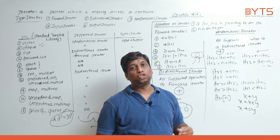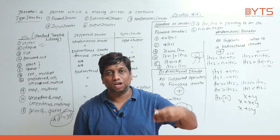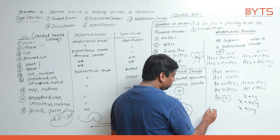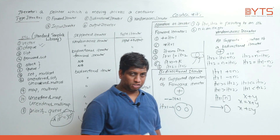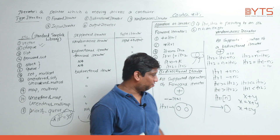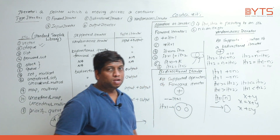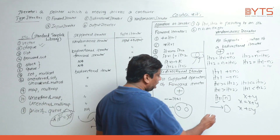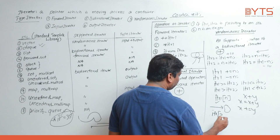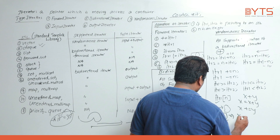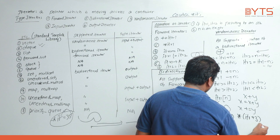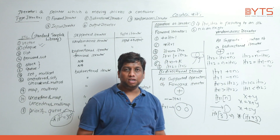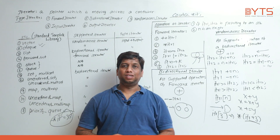Compound assignment operators like `itr += n` and `itr -= n` are also supported on random access iterators. Comparison operators such as `itr1 >= itr2` and `itr1 <= itr2` indicate whether one iterator has reached or passed another. Indexing is also supported: if itr points to the 0th element of a vector or deque, writing `itr[3]` accesses the 3rd element — equivalent to `*(itr + 3)`. With this, the STL concept summary is complete.